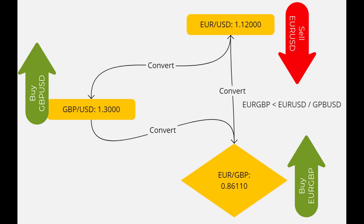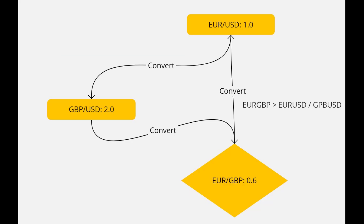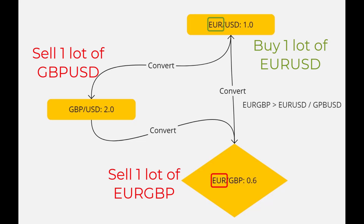For example, if the price of EURUSD is 1.0, the price of GBPUSD is 2, and the price of EURGBP is not 0.5 but 0.6, we can see that the EURGBP is overpriced. We can sell EURGBP and to avoid losses from fluctuations, simultaneously buy EURUSD and sell GBPUSD. All three trades have the same volume — we sold and bought one lot of EUR, one lot of GBP, and the same for the dollar. So no matter where the price moves, our profits from one direction will cover losses from the other — we are totally safe.